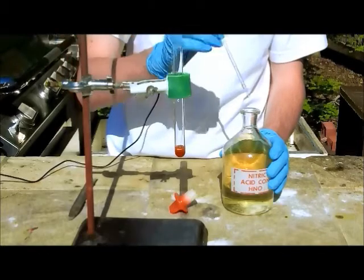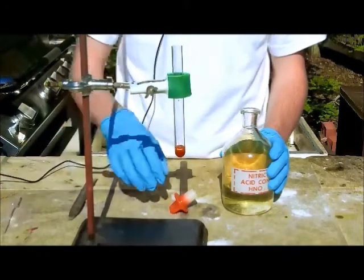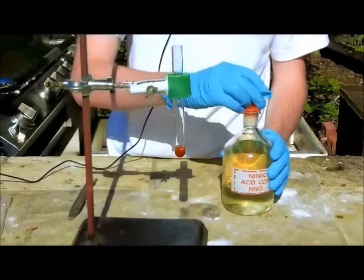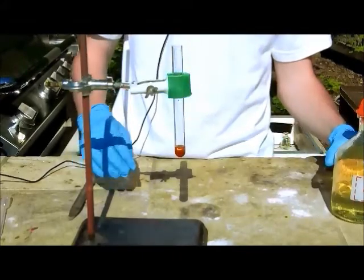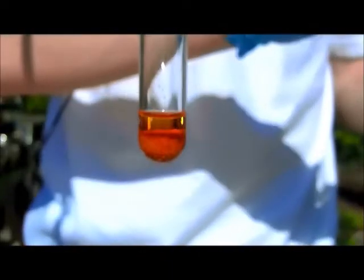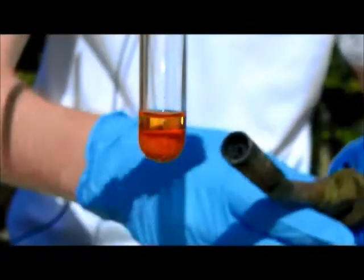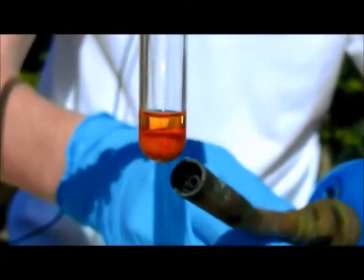Alright, once you've got the crystal slightly submerged in concentrated acid, heat it very gently with a torch. Let's go in for a close-up for this. Okay, now I'm gently heating this with a torch to get all of the dichromate to dissolve.